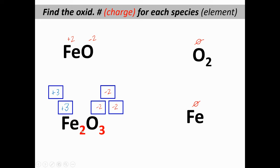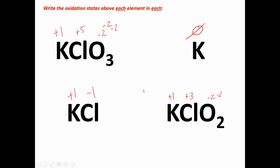Iron can be plus two or plus three — check your periodic table. In Fe₂O₃, there are two iron atoms; iron must be plus three because plus three plus three equals positive six, and minus two, minus two, minus two equals minus six. The whole thing adds up to zero. So iron is plus three and oxygen is minus two.